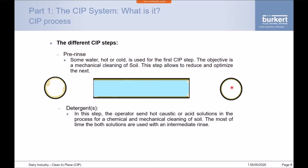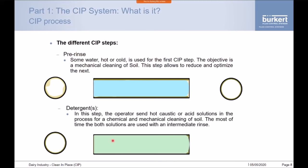We then add the detergent step, where the operator sends hot caustic or acid solutions through the pipework — again at high velocity to maintain mechanical cleaning action as well as chemical cleaning. The detergents remove the large bulk of the remaining material. However, they won't take everything out, so typically after this step we also have a rinse stage to remove any remaining loose particles and chemical left within the pipework and equipment.